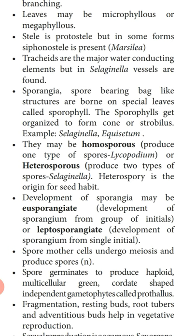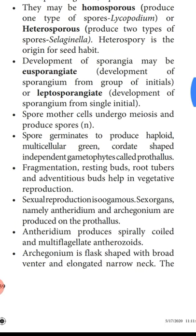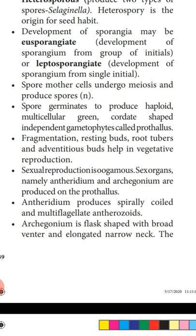The spore mother cell undergoes meiosis to produce four haploid spores. These spores germinate to produce a haploid, multicellular, green, cordate (heart-shaped), independent gametophyte called the prothallus. The prothallus is the gametophyte of pteridophytes.